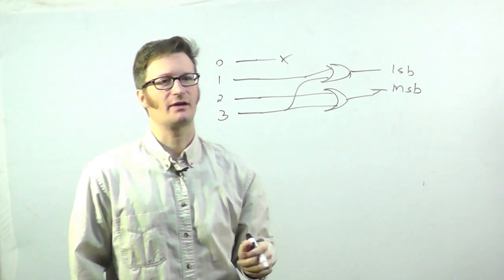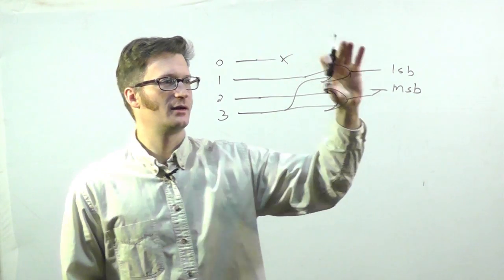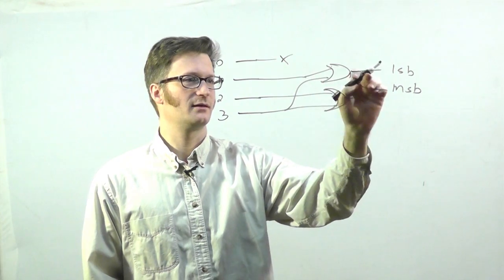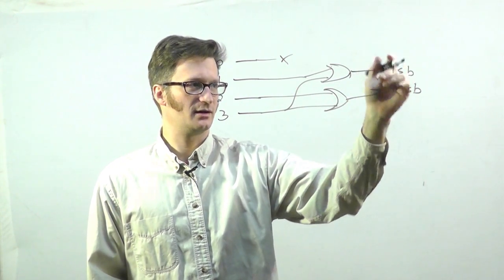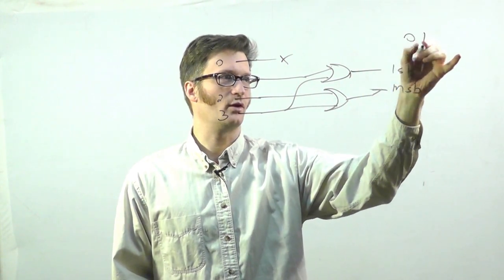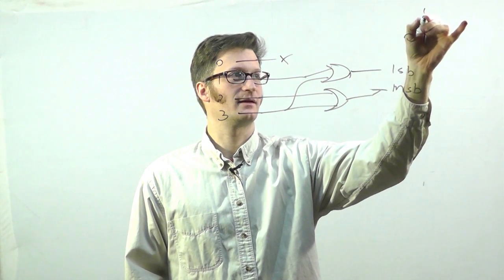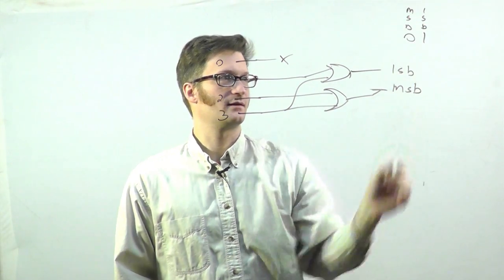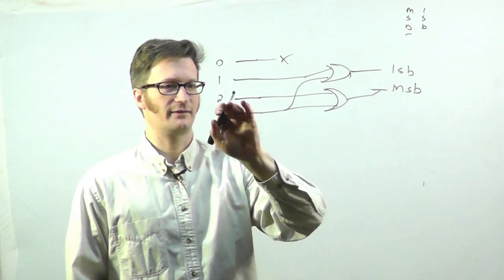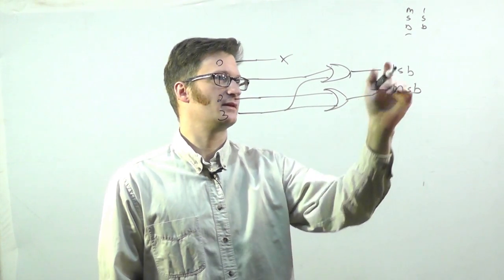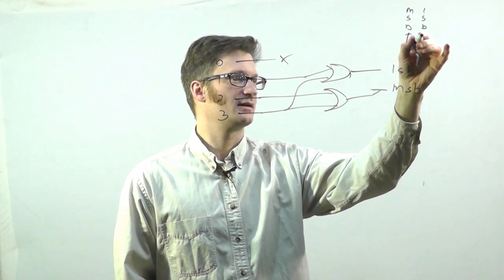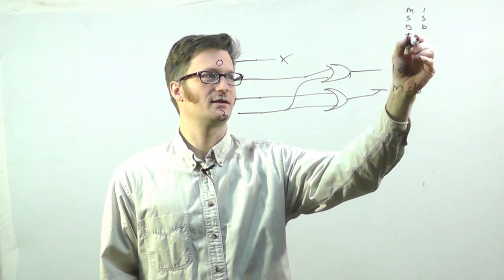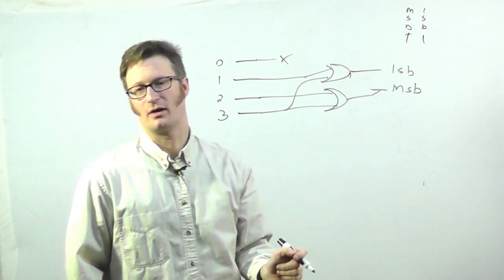Let's look at what happens. When input 0 is asserted, neither output goes high. When input 1 is asserted, the least significant bit goes high, giving us binary 01. When input 2 is asserted, the most significant bit goes high, and the other is low. And when input 3 is asserted, both outputs go high.